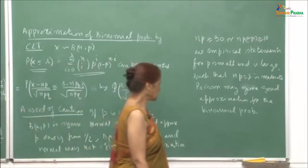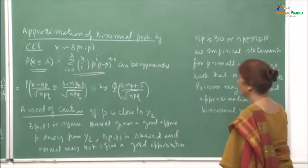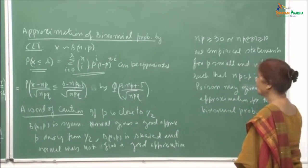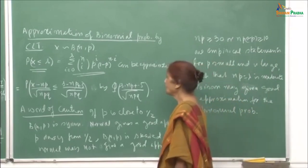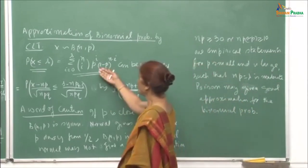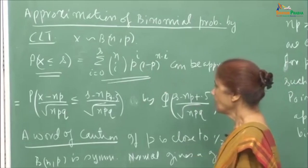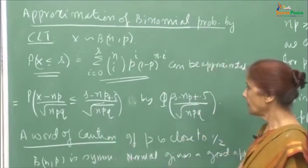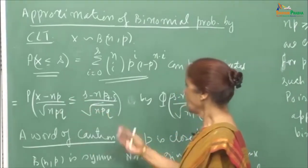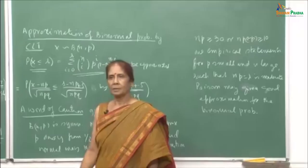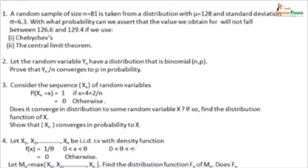Now that we have talked about the central limit theorem, proved it, and shown its applications, I will revisit approximating binomial probabilities by standardizing and reducing to a standard normal variate. There are practice problems for you to try on Chebyshev's inequality, the central limit theorem, the weak law of large numbers.